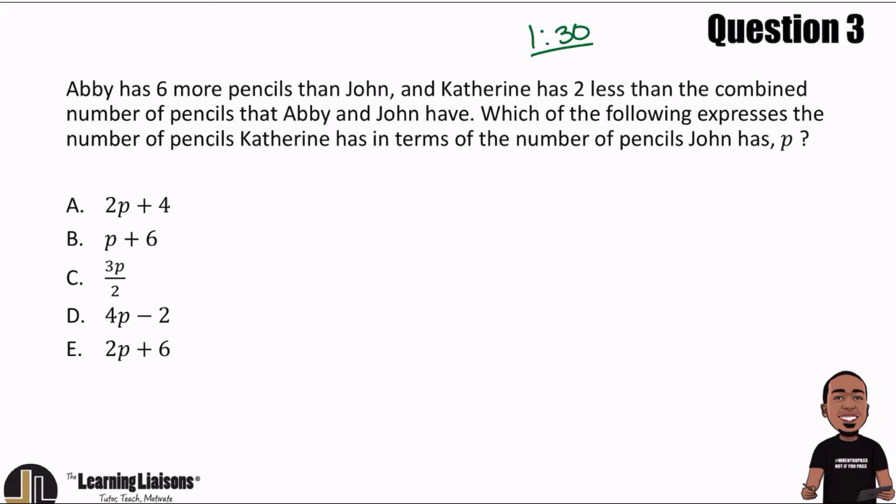What we're going to do is write Catherine's pencils in terms of the ones that John has. Let's go ahead and think about this in English to start off with. So let's see what Catherine has first and foremost — let me go ahead and just adjust this real quick.